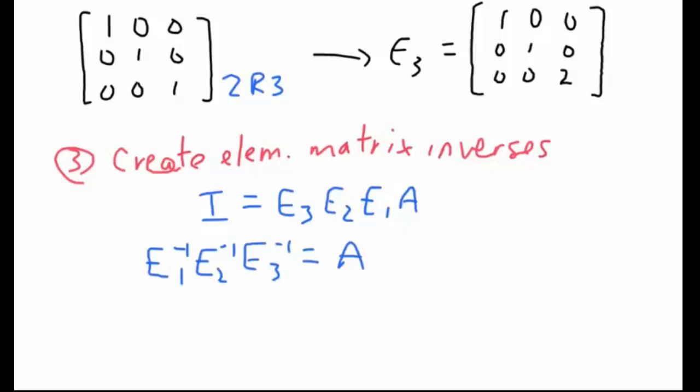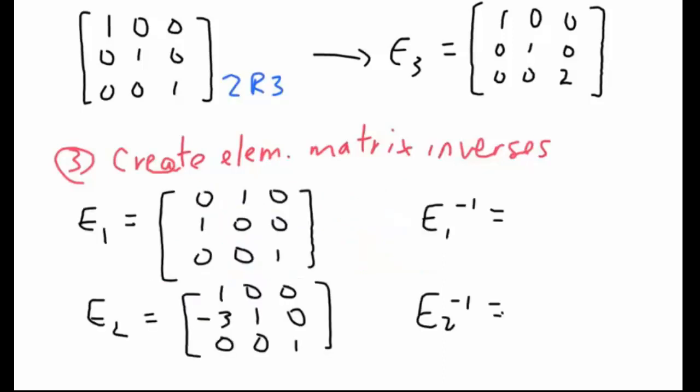And we can do that by flipping the order of the elementary matrices and then applying the inverse to all of them. So this equation here is what we're after. We're after E1 inverse, E2 inverse, and E3 inverse. In this step is where we can use the ideas from the previous lesson.